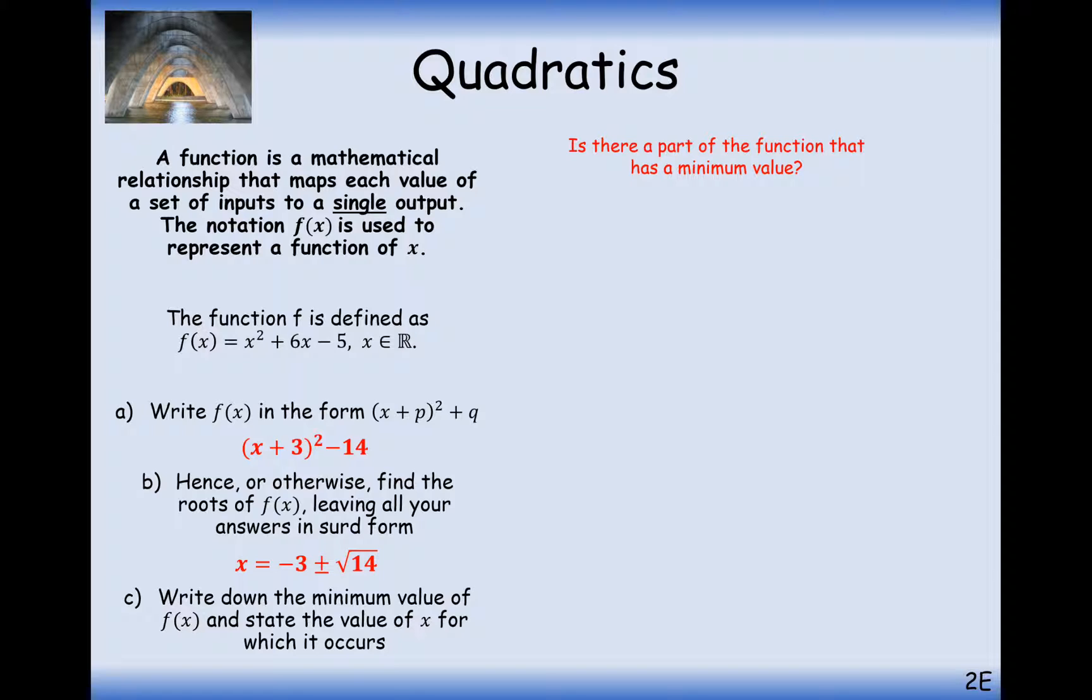Part c now, write down the minimum value of f of x and state the value of x for which this occurs. So the minimum value that this function can take, if x is very small then that's going to be very big, and same with big values of x. So using part a, we can answer part c.